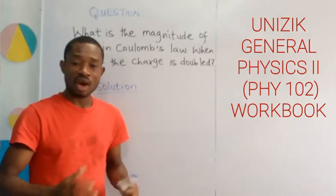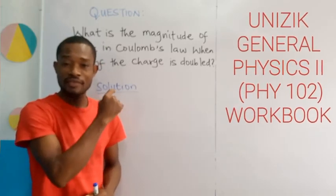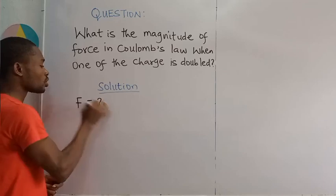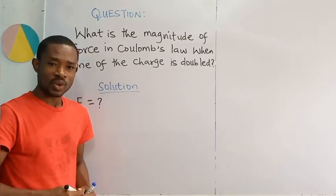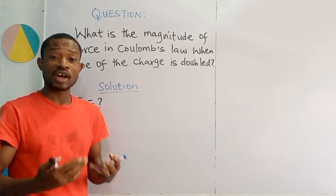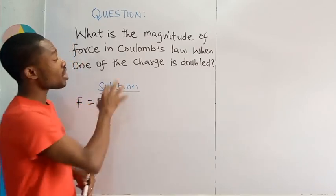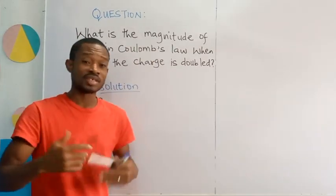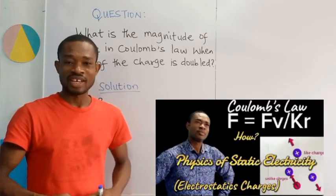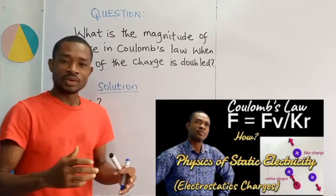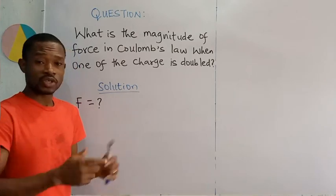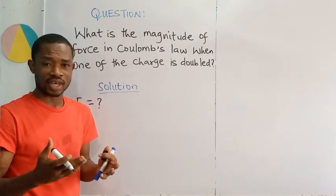So, let us start by declaring our parameters. What and what do we have in this question? The first thing is to bring out the force and then I am going to indicate question mark. Why? Because in this question, we are asked to find the magnitude of the force. So, we don't know the magnitude, the value of the force. We have already been directed to the fact that this problem is Coulomb's law related under electrostatics.